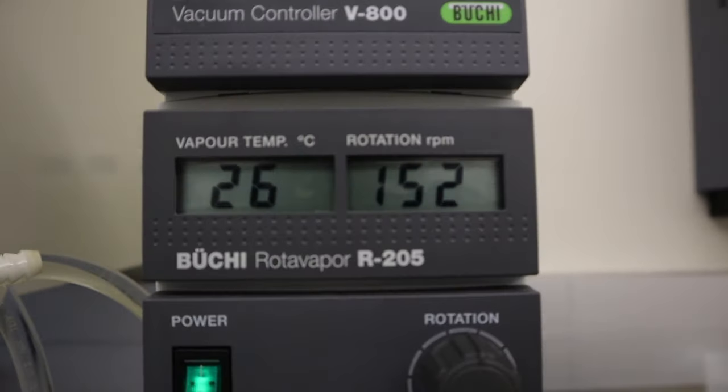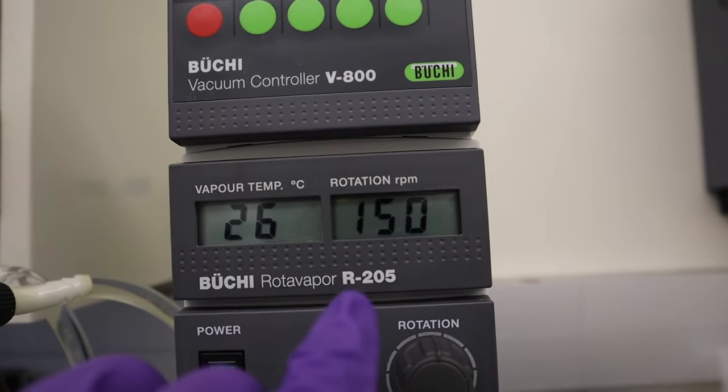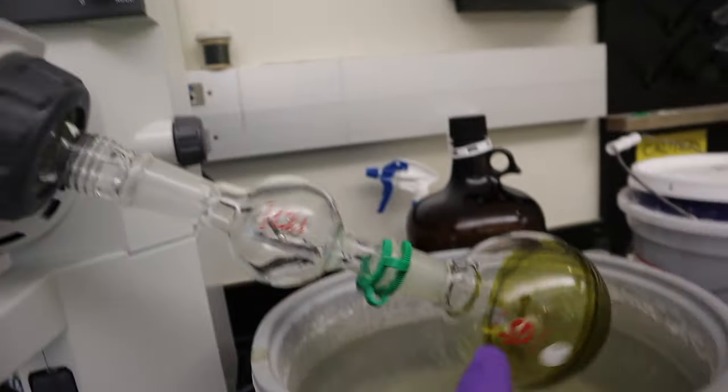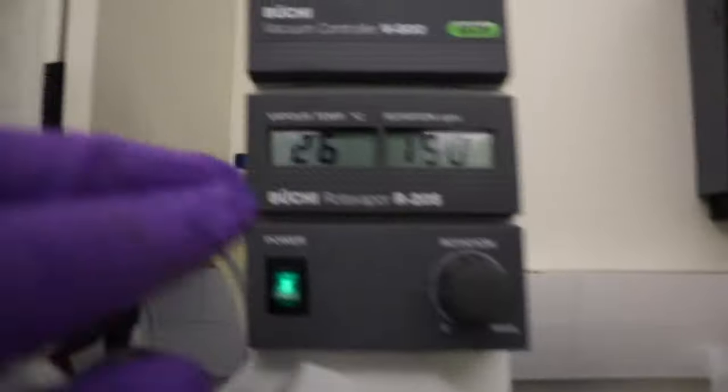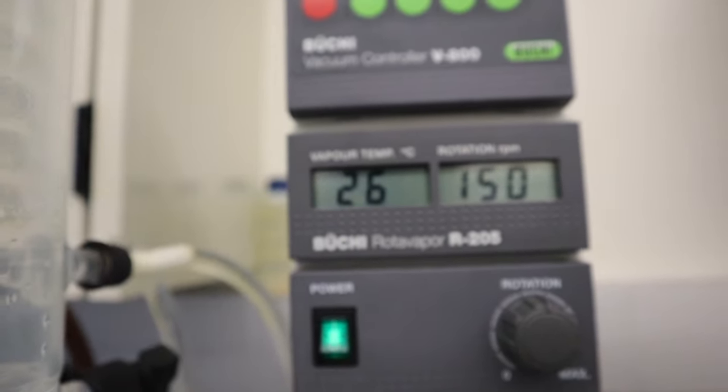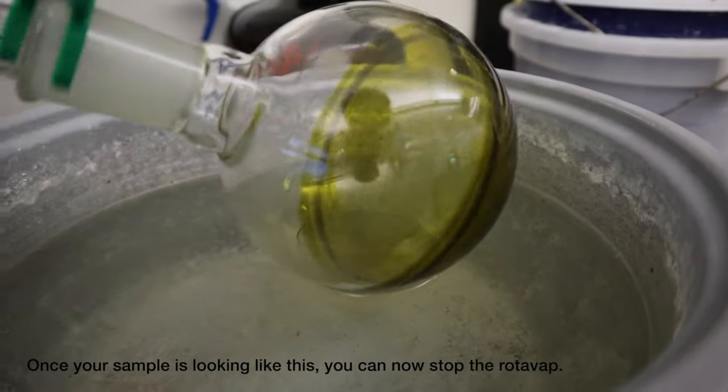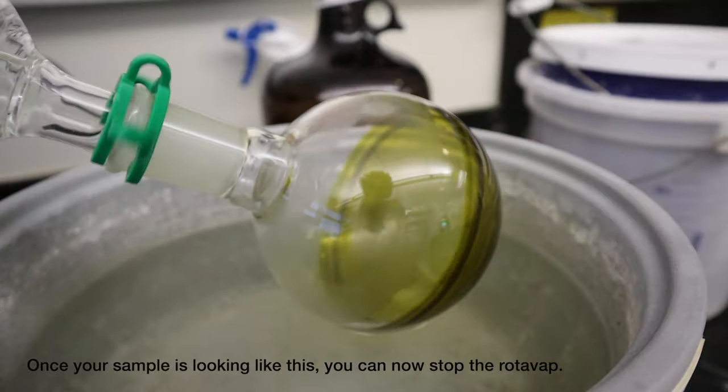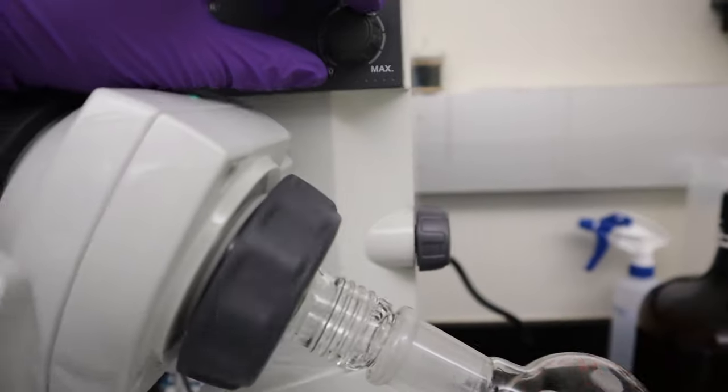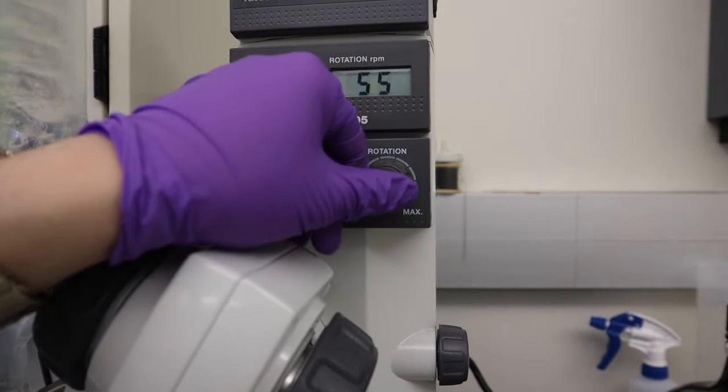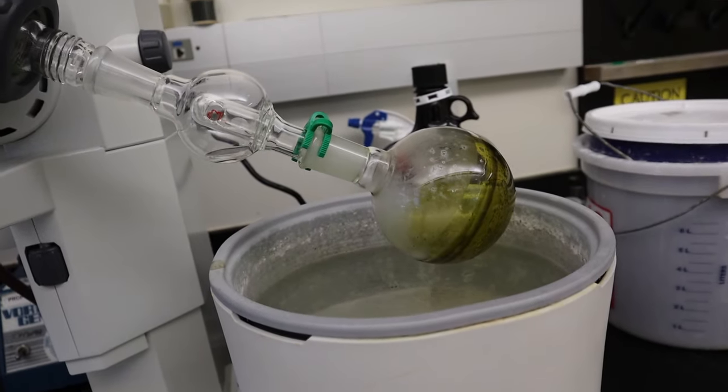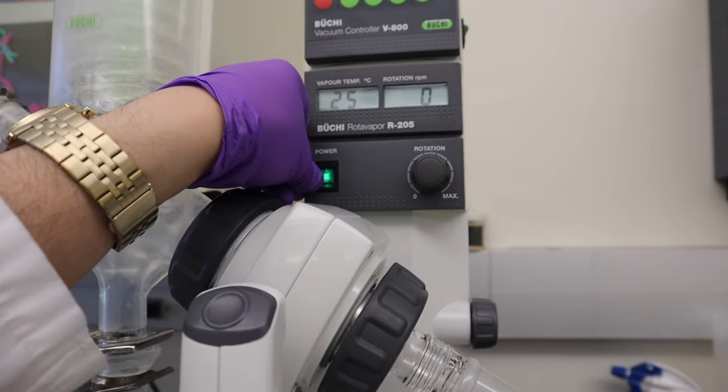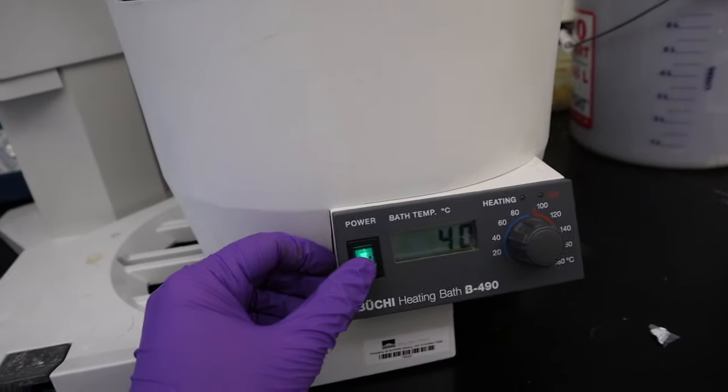In this machine, you can see the RPM or the rotation per minute of this round flask. Once it is already looking like this, you can now stop the rotary evaporator. Stop the rotation, raise the flask, and turn off the heating bath.